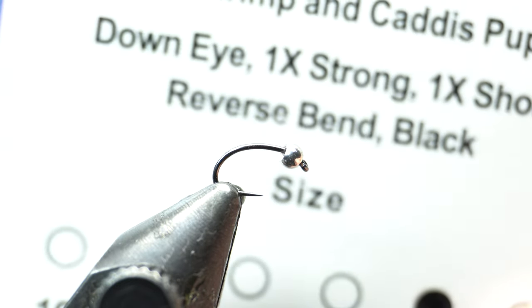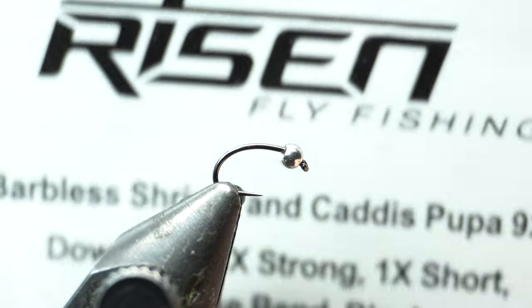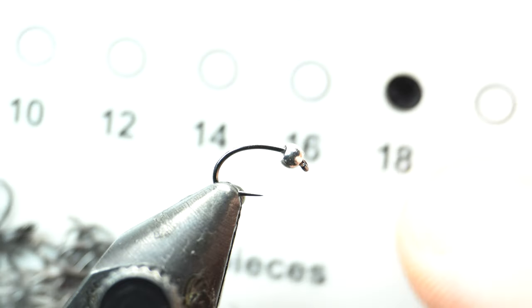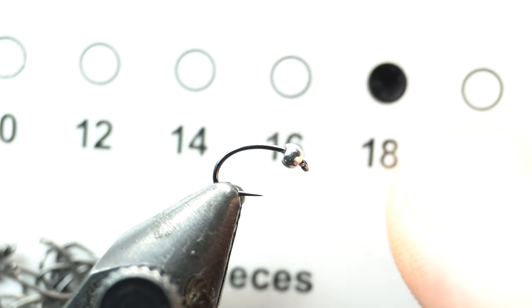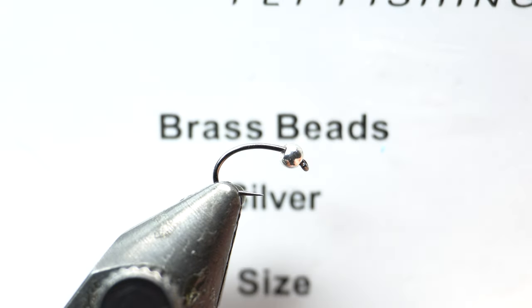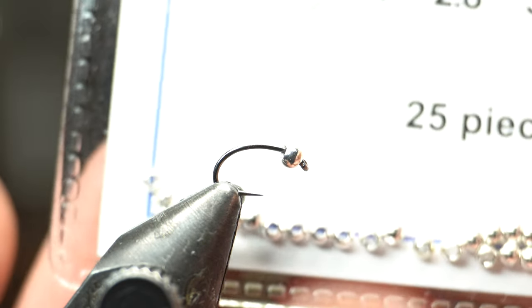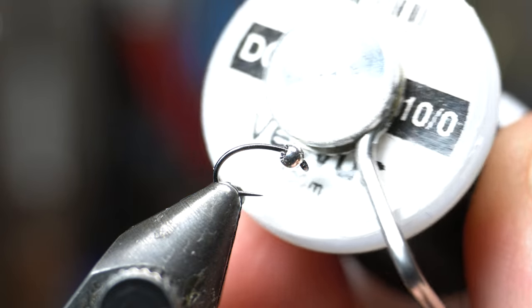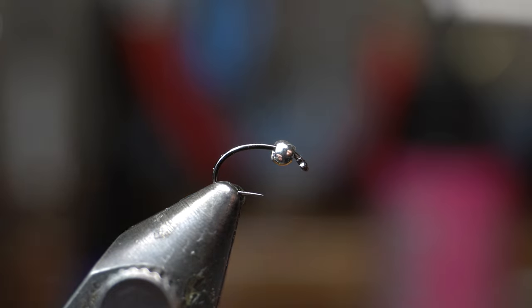This is the 9251 barbless hook from Risen Fly. You don't have to use barbless, but I like them. I really like these hooks. We're tying a size 18, and the bead is also Risen's brass beads, 2 millimeter. The thread we're using is Veevus 10-aught, and if you saw last week I used Veevus 16-aught, much finer thread than this.